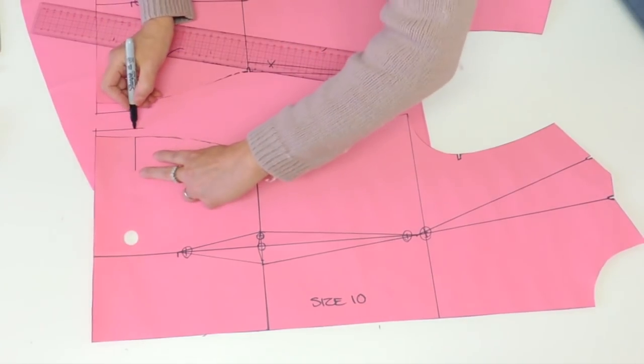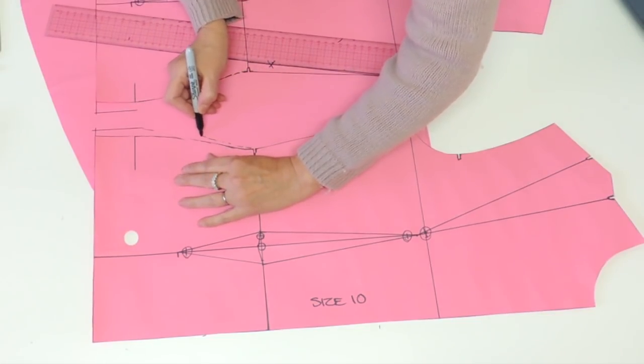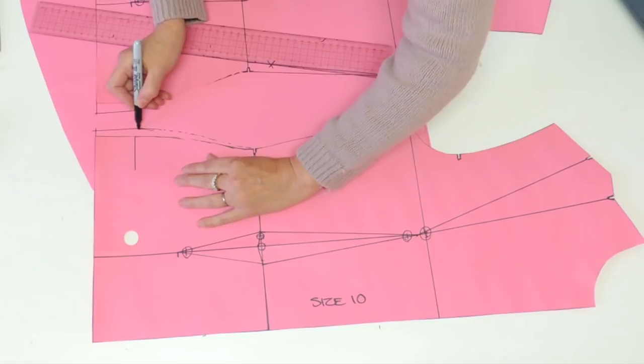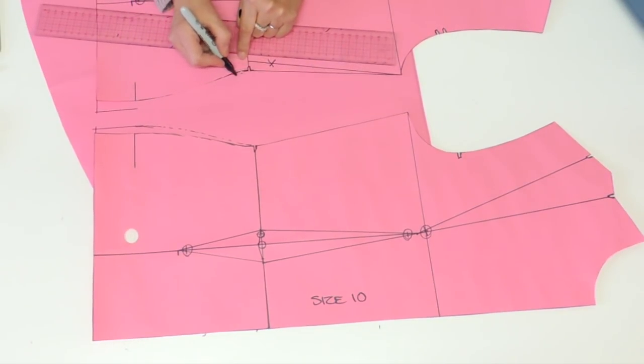You could just trace your new line from the waist and retrace the side seam. Do the same thing or report your line on the back.